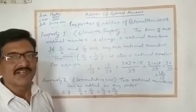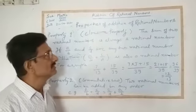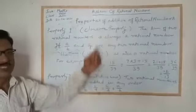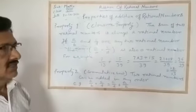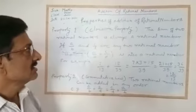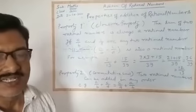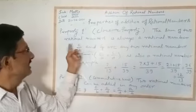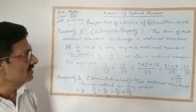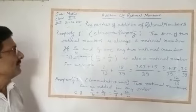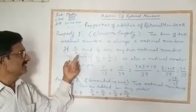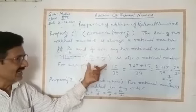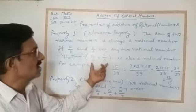Now we will learn the properties of addition of rational numbers. In the first property, we learn the closure property. Closure property states that the sum of any two rational numbers is always a rational number. For example, if A/B is one rational number and C/D is another rational number, when both are added, the result is also a rational number.